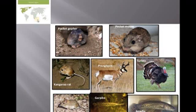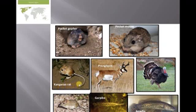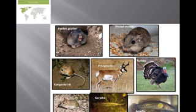Coming to the Nearctic region, the pocket gopher is very much common, which is a burrowing animal. Another burrowing animal is the pocket mouse. Kangaroo rats and pronghorns are quite common in this region. Turkeys are very common, along with shrews, gaur, and pike gaur — Garra fishes — which are very common. Some channel catfishes and burrowing fishes are also found here.